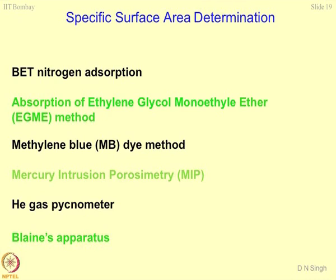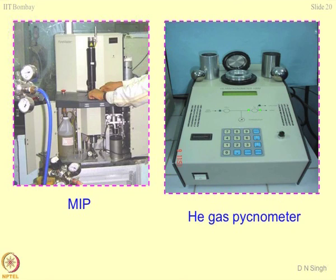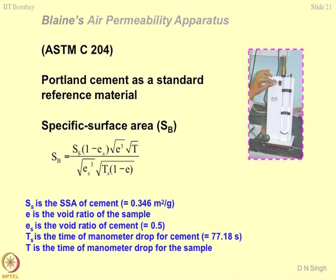The Blaine apparatus is also known as the air permeability method. This is the MIP mercury intrusion porosimetry, and this is the Blaine permeability apparatus for finding out the surface area. As per ASTM C 204 for admixtures and pozzolanic materials, you use Portland cement as a reference material, for which the specific surface area is 3460 centimeter square per gram. The question is: can this method be applied to any material or are there constraints? The materials which are finer than cement — particularly silica fume — where the surface area is of the order of 20 to 40 meter square per gram, and most synthetic materials such as zeolites and resins, you cannot use this technique.